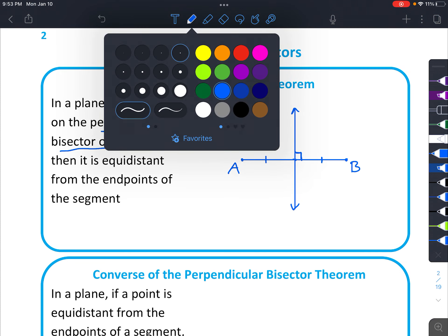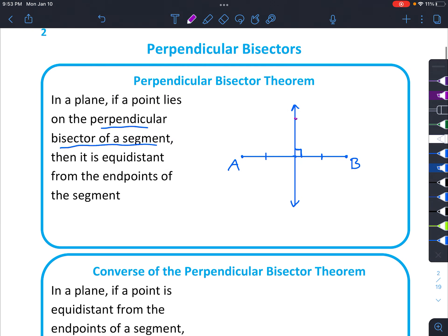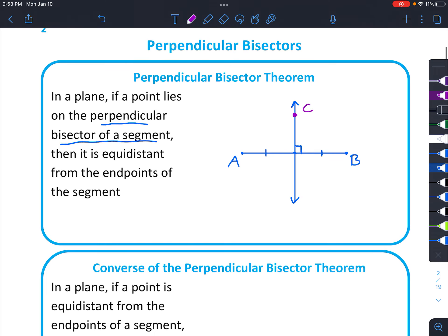Okay, now let's continue with the theorem. It says that there's a point that lies on it. So let's go ahead and put a point right here. We'll call it point C. It says then it is equidistant from the endpoints of the segment. Which means that the distance from A to C is the same as the distance from C to B. I'll mark that with two little marks.